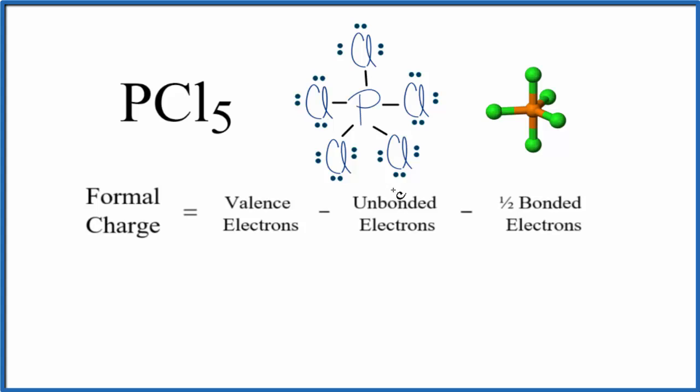Here's the Lewis structure. When we calculate the formal charge, that'll help us determine whether this is the best or most favorable Lewis structure for PCl5. You'll notice that phosphorus has one, two, three, four, five bonds, so it has 10 electrons around it. That's okay—phosphorus can have an expanded octet. Let's do phosphorus first.